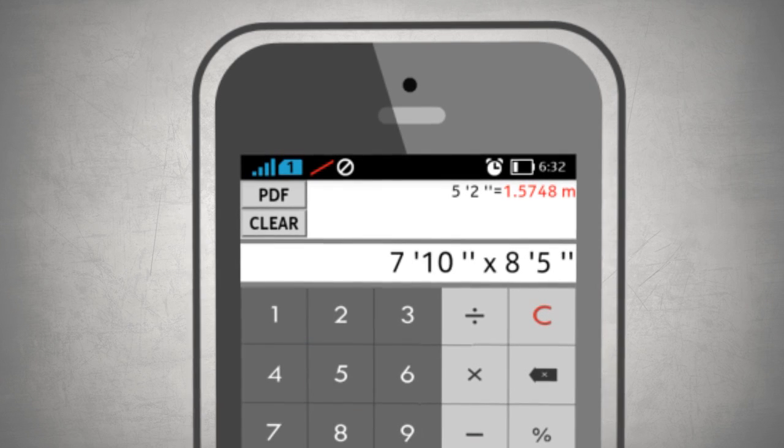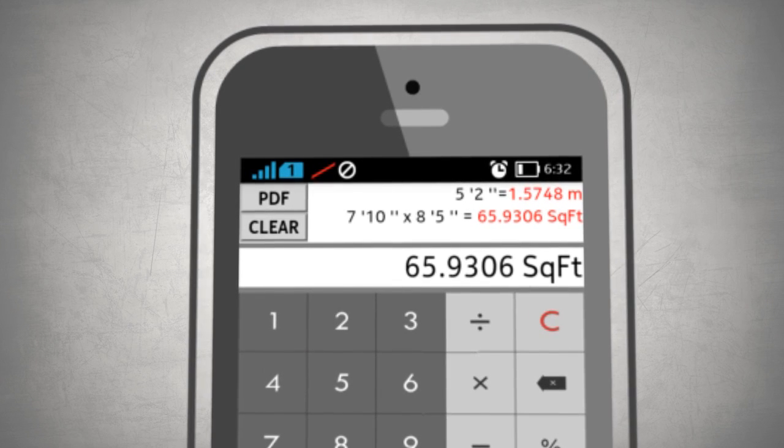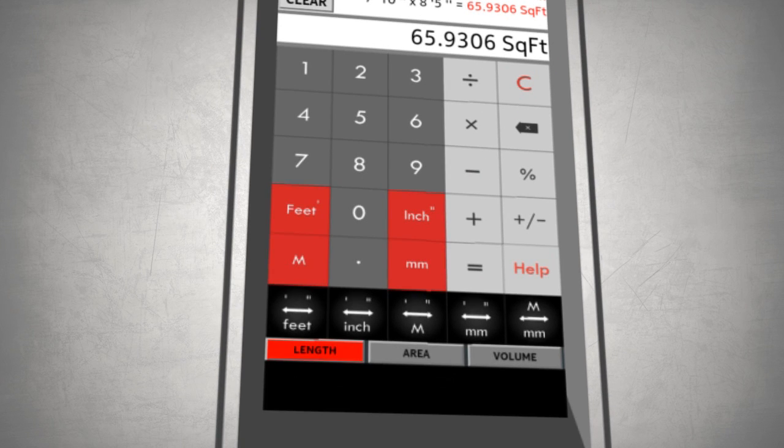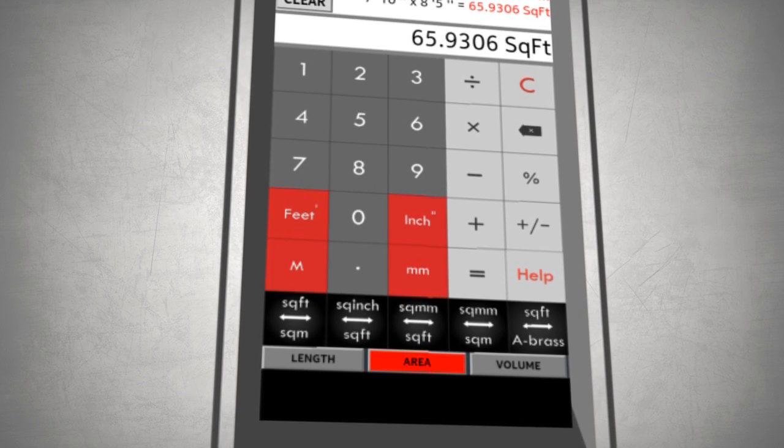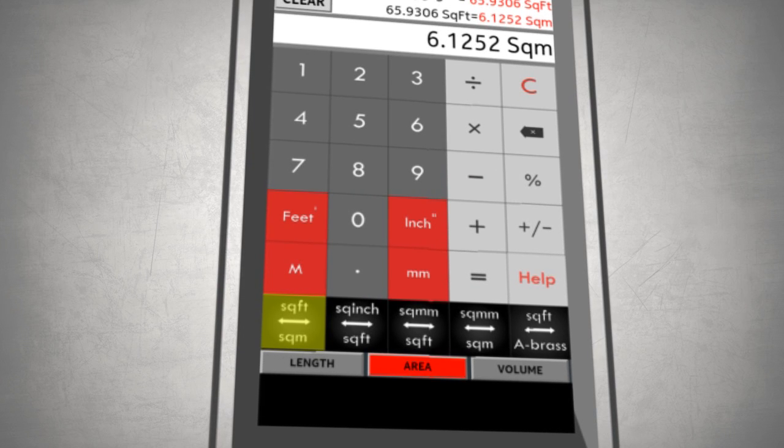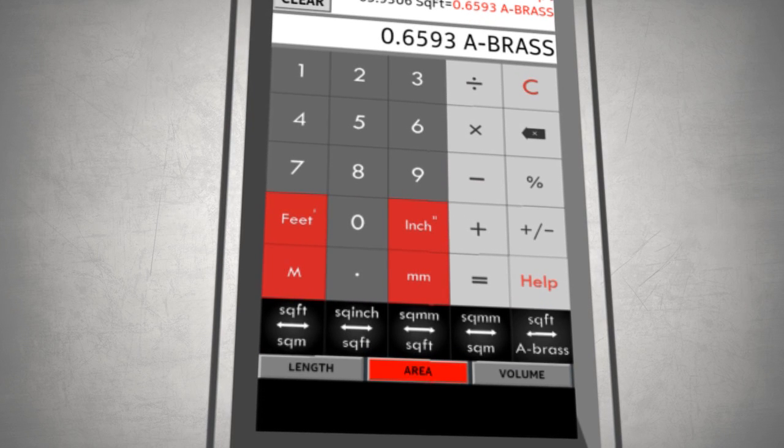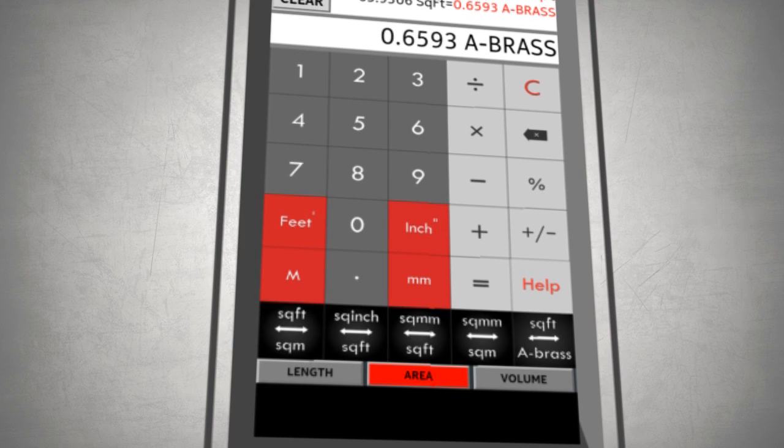Now since the result is in square feet, press Area. At a single click, you can convert the result to, say, square meter or area brass. Similarly, you can try various calculations with meter and millimeter as the units.